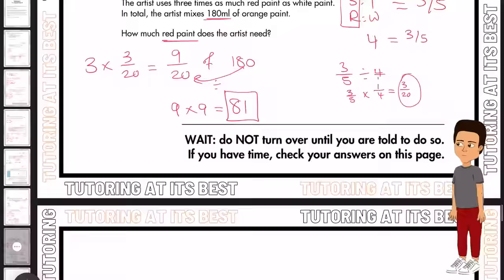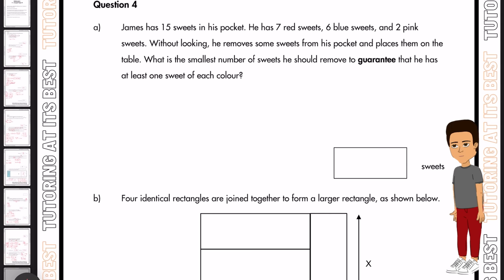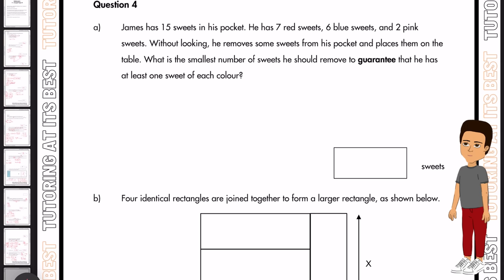Let's go for question four. James has 15 sweets in his pocket. He has seven red, six blue and two pink sweets. So without looking, he removes some sweets from his pocket and places them on the table. Now, what is the smallest number of sweets he should remove to guarantee that he has at least one sweet of each color?